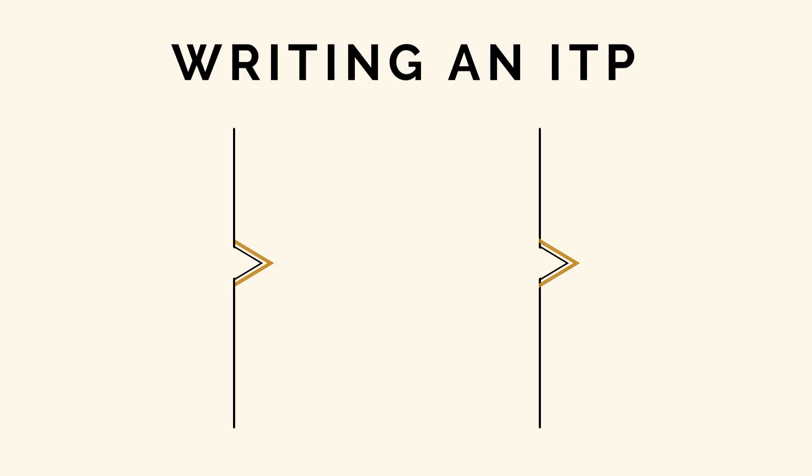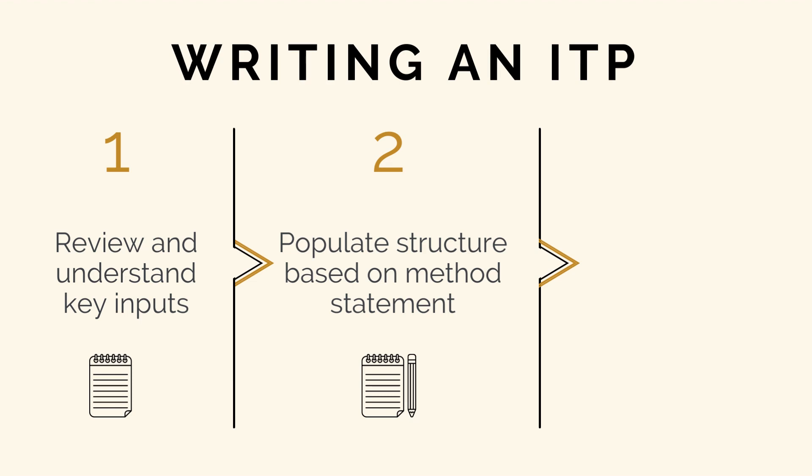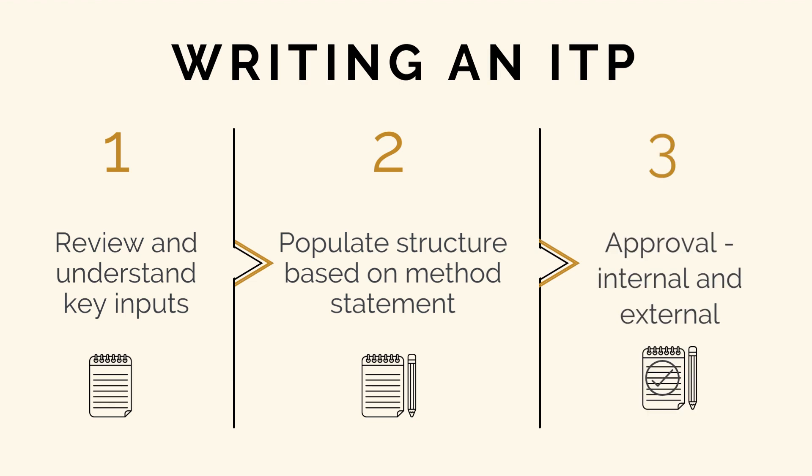There are three steps to writing an inspection and test plan. First, we need to review and understand the key inputs — these will be the work breakdown structure, design drawings, technical specifications, and the construction methodology. Then we'll list our methodology and populate all the other columns of our ITP against this. Finally, we'll submit this to the quality team for their review and approval. On some projects, the client and owner's engineer will need to sign off on this as well, and we'll need to integrate and sign off on their comments.